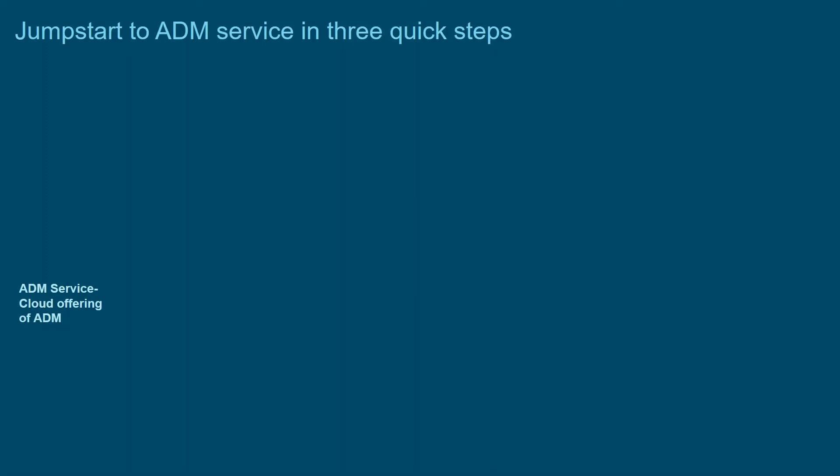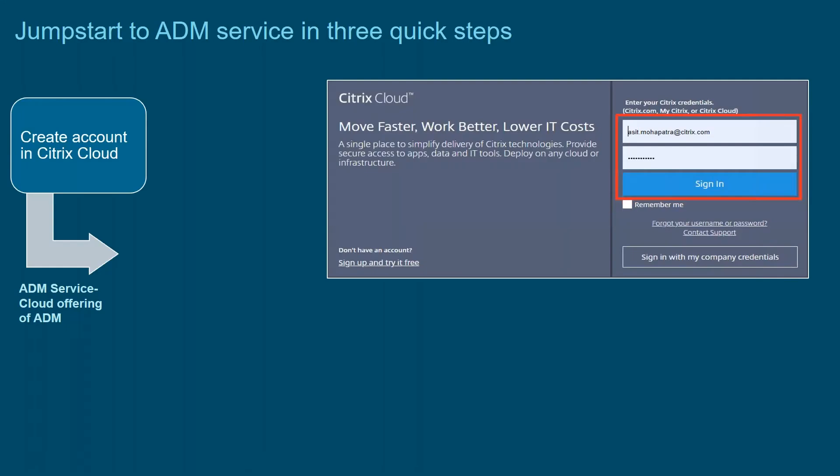Then we'll see some real app analytics use cases which you can benefit from. As we know, we can jumpstart ADM Service in three quick steps — it's very easy to onboard your ADC to ADM Service. The first step is to create an account in Citrix Cloud. Some of you might already have an account, in which case you just need to sign in.